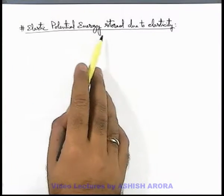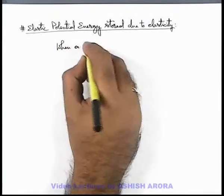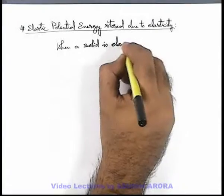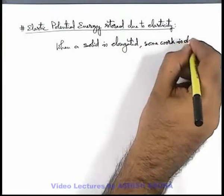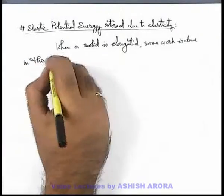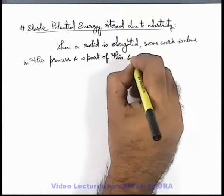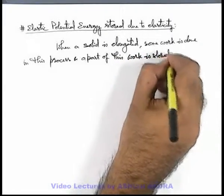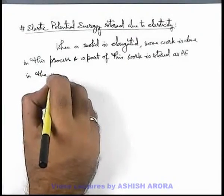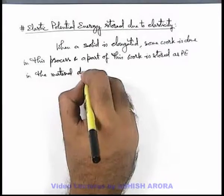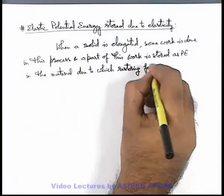Now we will discuss about the elastic potential energy stored due to elasticity. When a solid is elongated by an external force, some work is done in this process, and a part of this work is stored as potential energy, which we term as elastic potential energy, in the material due to which restoring forces exist.